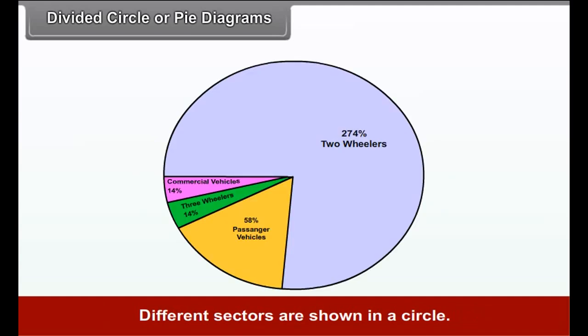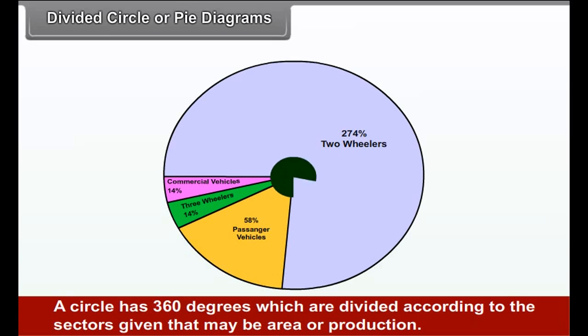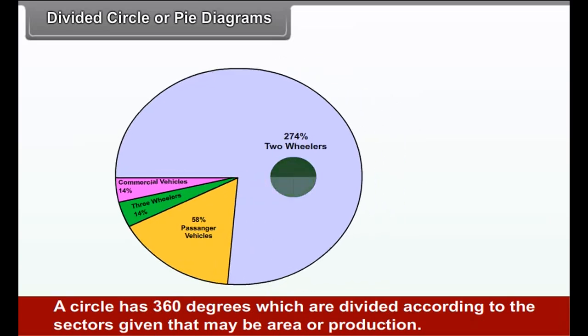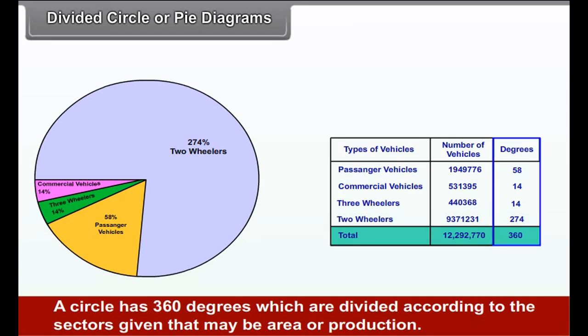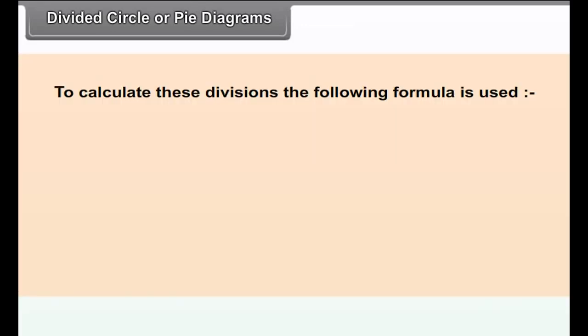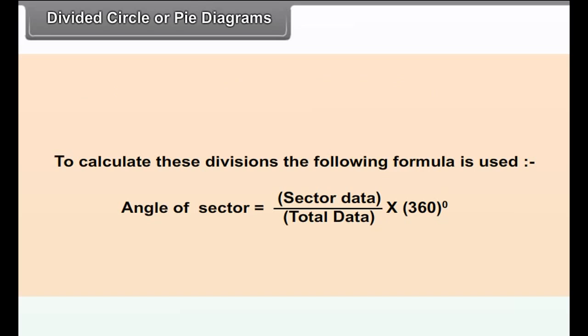Uses. Bar graph is very useful for comparative study of elements of various regions. Agricultural production, industrial production, population of various regions, etc. can be shown with the help of a simple bar graph.